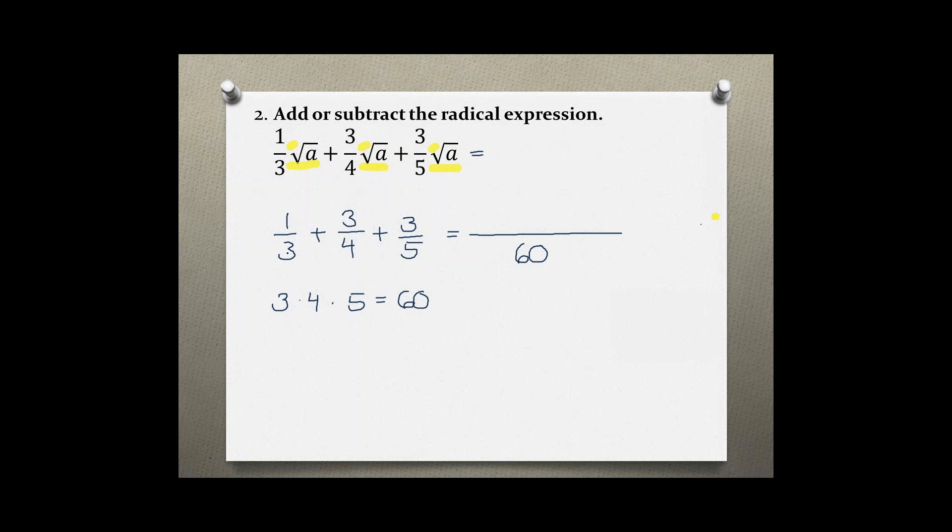Now to get to 60, I would have to multiply 3 times 20, and I do that to the denominator and the numerator to keep the fraction with the same value. Then 4, I would have to multiply by 15 to get 60, and I'm going to do that with the denominator and the numerator.